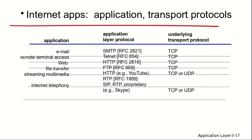Here is a mapping of applications to their protocols. Email uses SMTP; remote terminal access uses Telnet; web uses HTTP; file transfer uses FTP; streaming uses HTTP or RTP (Real-Time Protocol); internet telephony uses SIP or RTP, where SIP stands for Session Initiation Protocol. At the transport layer, each application specifies whether it uses TCP or UDP.